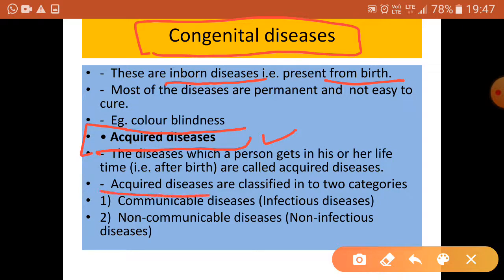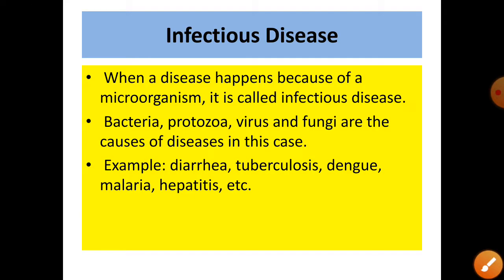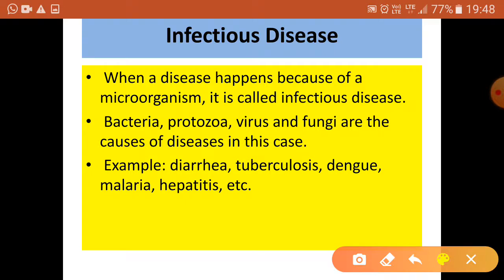Acquired diseases can be further classified into communicable and non-communicable diseases. Communicable diseases are also termed as infectious diseases, and non-communicable diseases are also termed as non-infectious diseases.